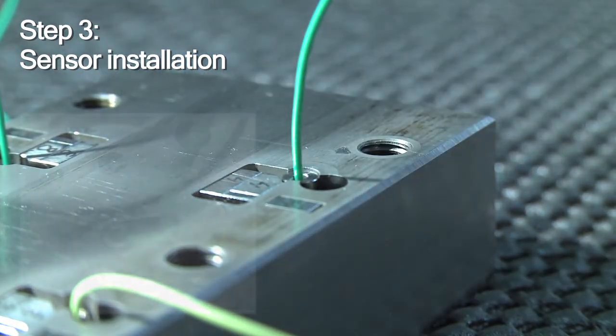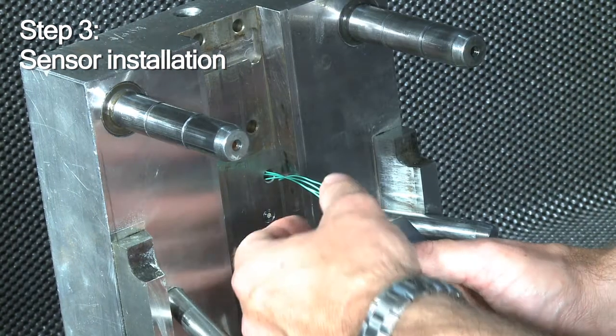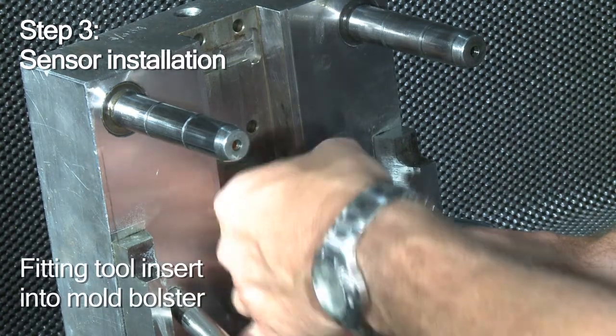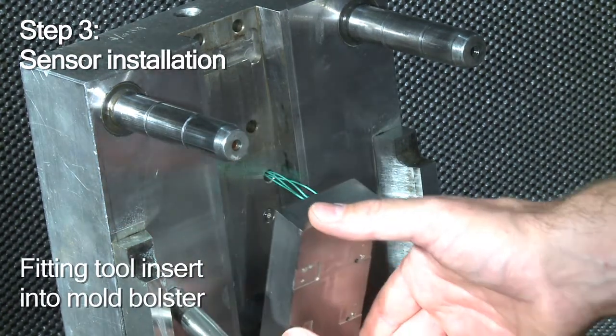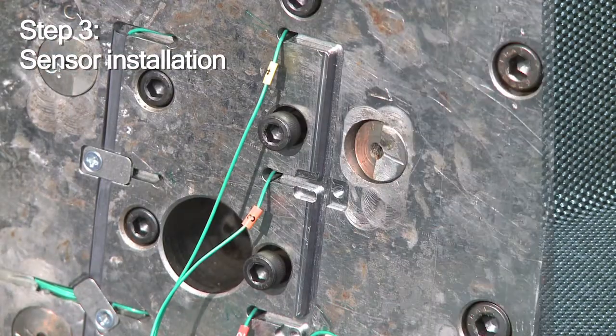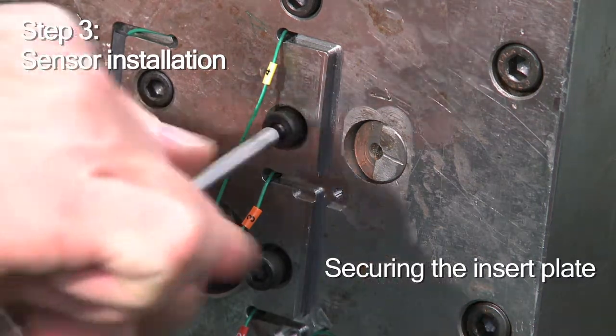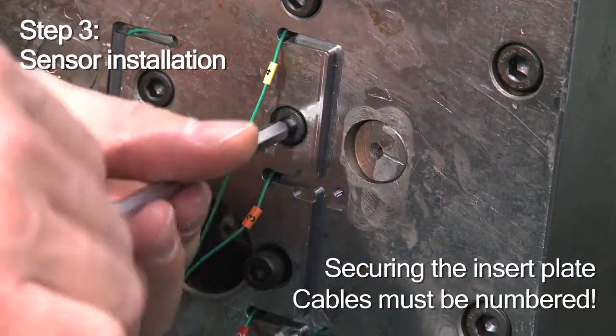To prevent cable damage, please check the direction of the slot in the spacer sleeve. To complete the sensor installation, you fit the tool insert, now containing the sensors, into the mold bolster. Finally, you attach the tool insert to the mold. Make sure all cables are numbered.